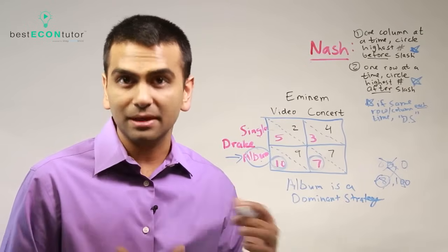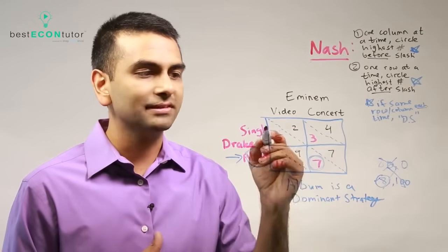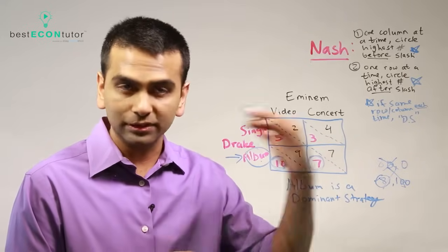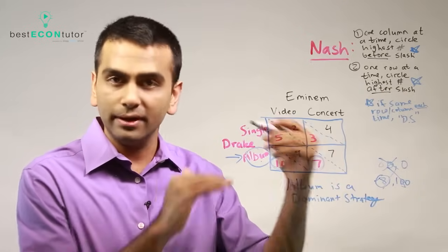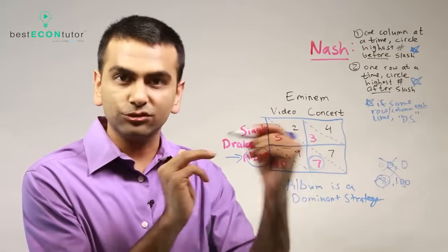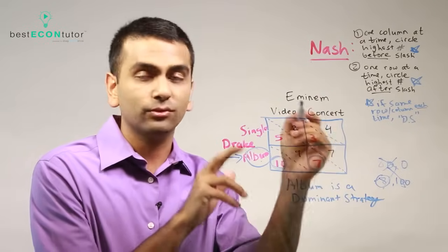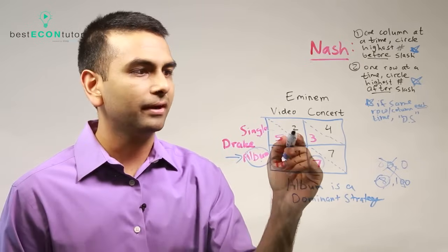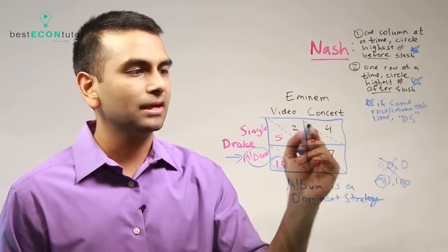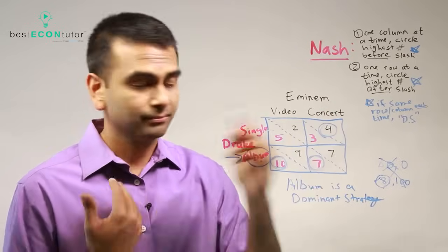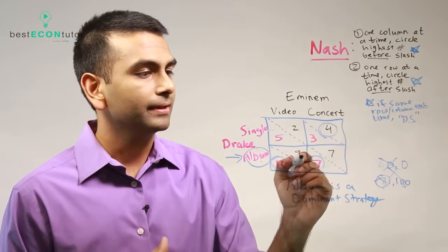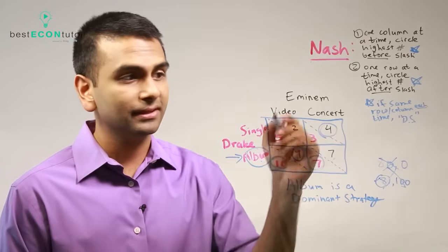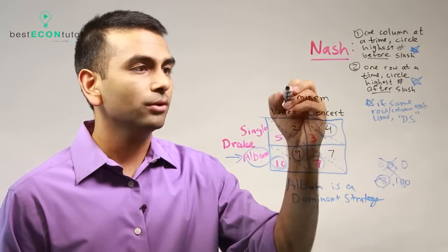We're halfway done. The other half is basically the same thing, but now we're playing as the other player. Instead of one column at a time, we're going one row at a time and only looking at the black numbers after the slash. In each row, we're picking which column is best - the column is what Eminem would be choosing between concert or video. If Drake's doing the single, the video gets Eminem two but the concert gets him four - so he'd want to do the concert. But if Drake did the album, then it's nine or seven - so the video is better. So Eminem has no dominant strategy.